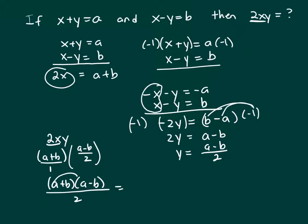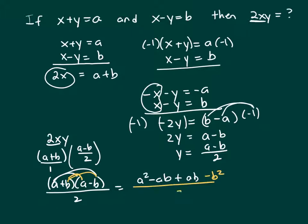Foil out the numerator. a times a is a squared. a times negative b is negative ab. b times a is positive ab. And then b times negative b is negative b squared, all over 2. Those cancel, so you're left with a squared minus b squared over 2. And that's one of your selections.